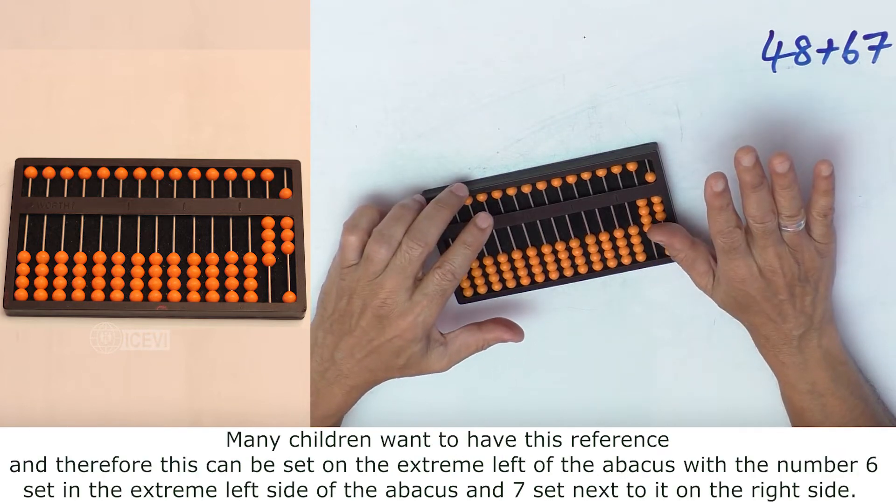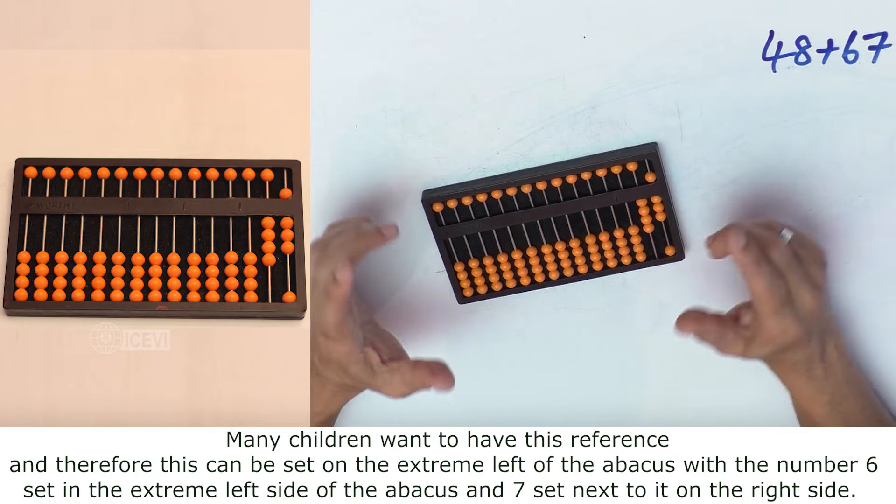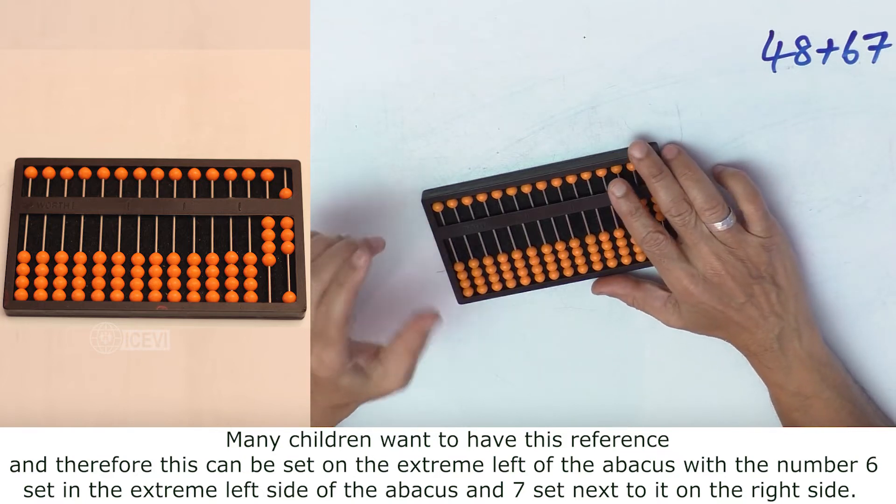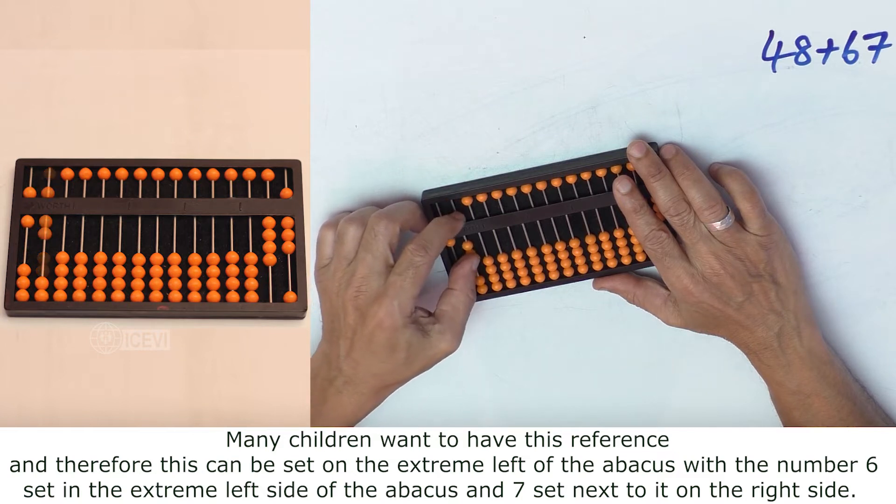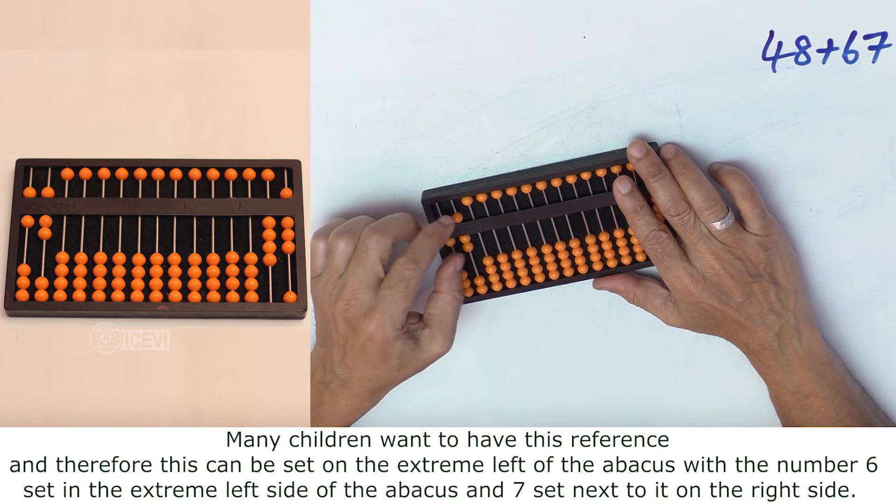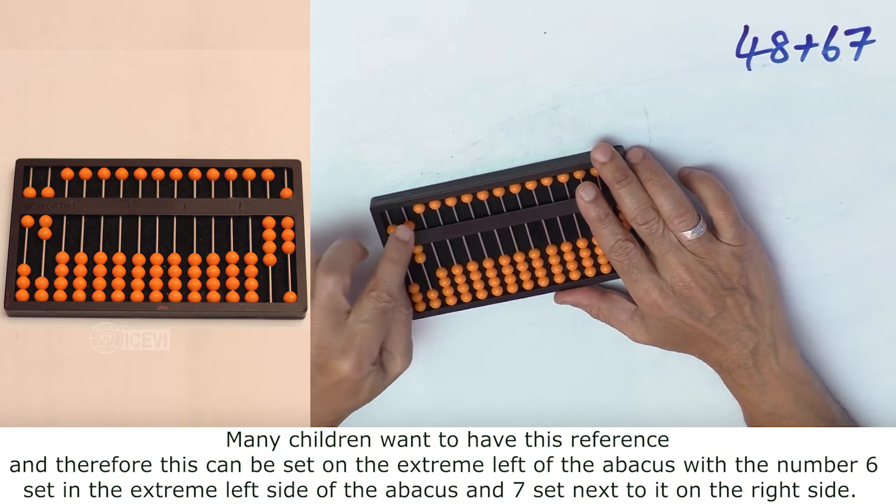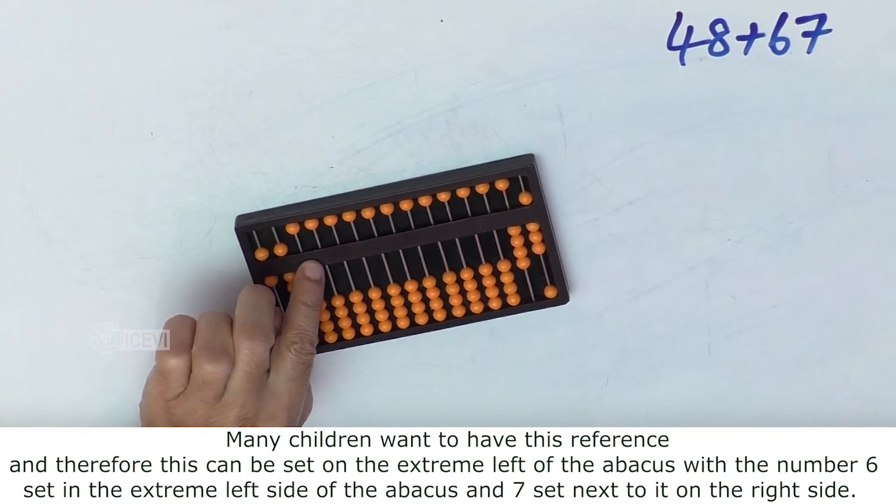Many children want to have this reference, and therefore it can be set on the extreme left of the abacus. That is, 6 set in the extreme left side of the abacus and 7 set next to it on the right side.